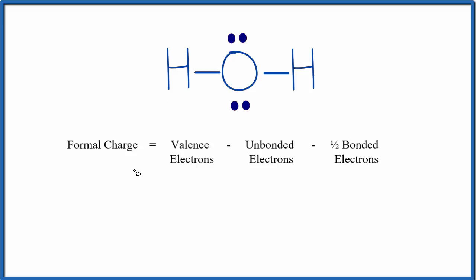So we'll start with this hydrogen right here. We have hydrogen, and hydrogen is in group 1 on the periodic table. That means it has one valence electron. So we'll put a 1 here.